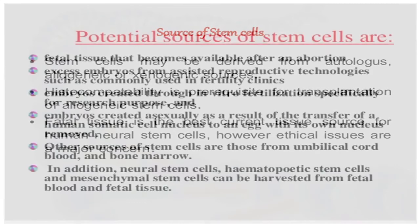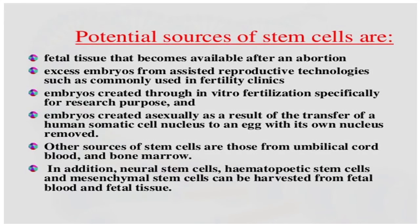Fetal tissue is the best current source for human neuronal stem cells; however, ethical issues are major concerns. Fetal tissue becomes available through abortion in clinics. Stem cells can be obtained from different sources including abortion-derived fetal tissue, IVF techniques, and assisted reproductive technologies. Neuronal stem cells, hematopoietic stem cells, and mesenchymal stem cells can be harvested from fetal blood and fetal tissue.